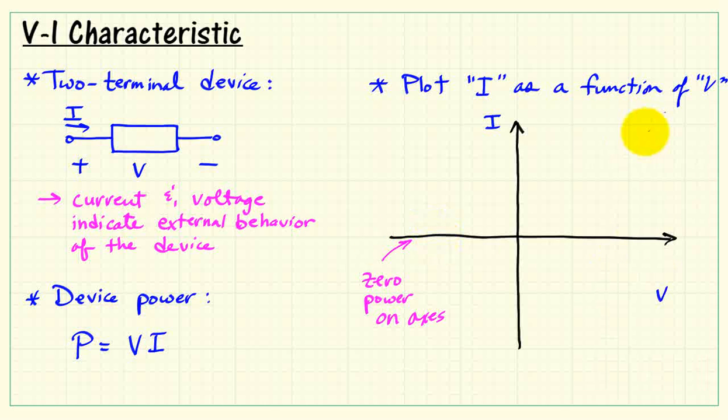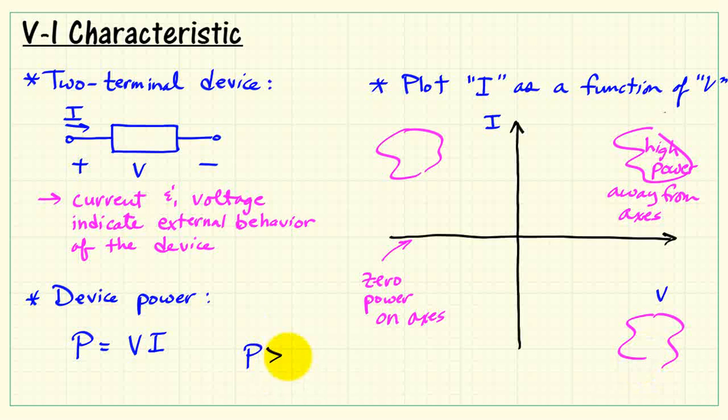Now, supposing we are far away from the axis—that is, both V and I are relatively large values. So high power means you're far away from the axis.